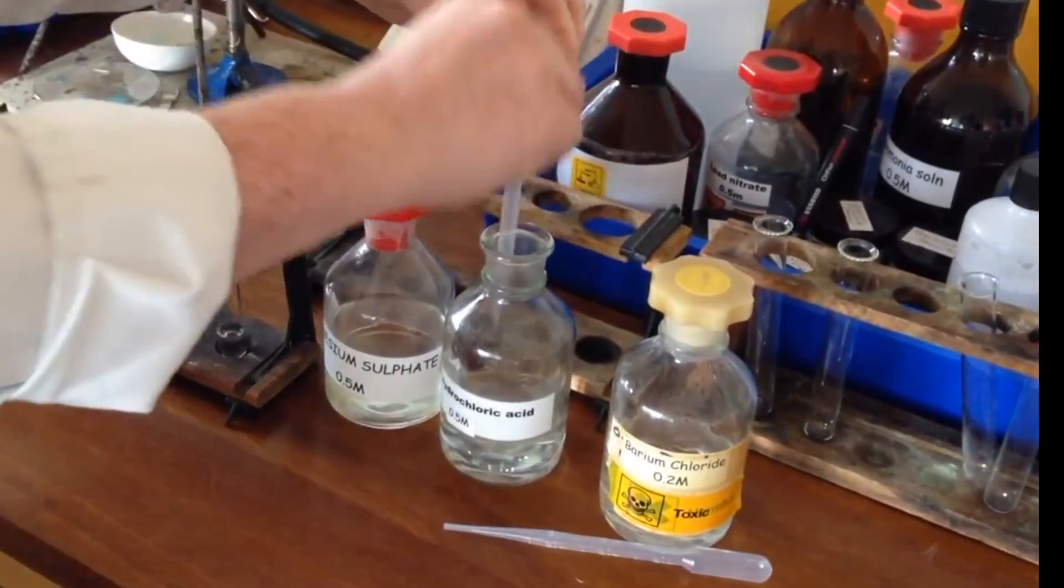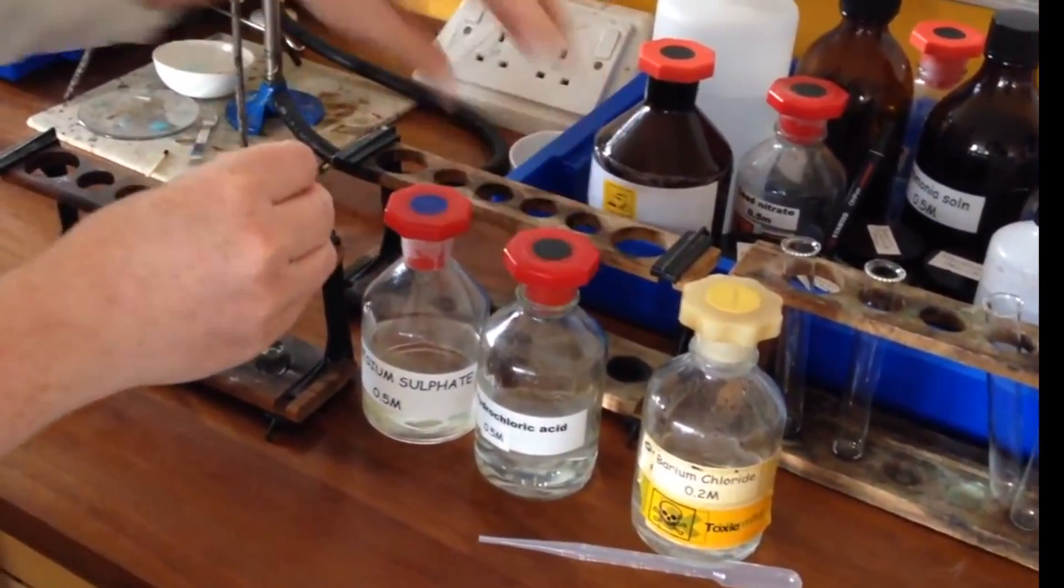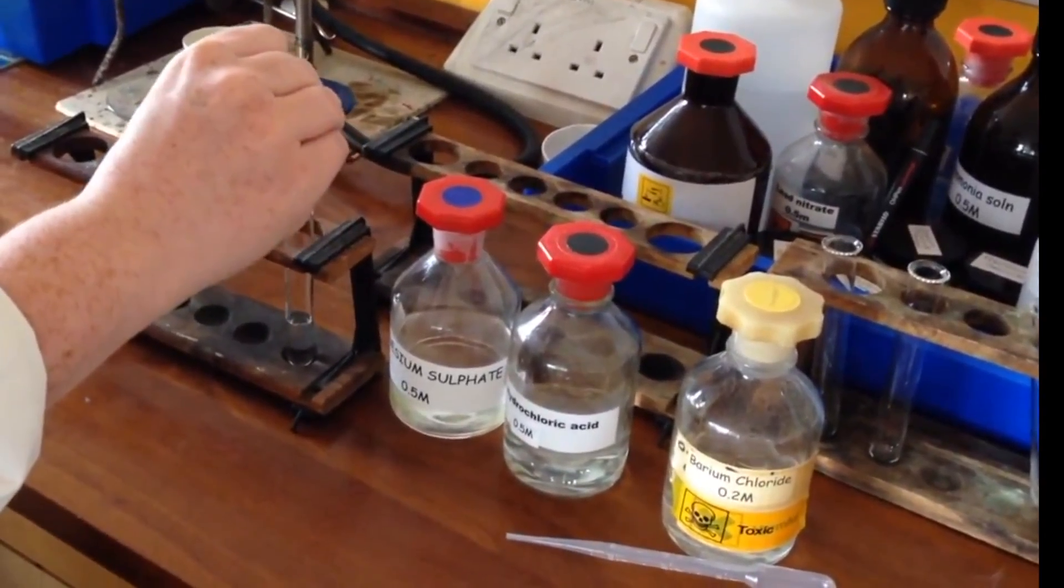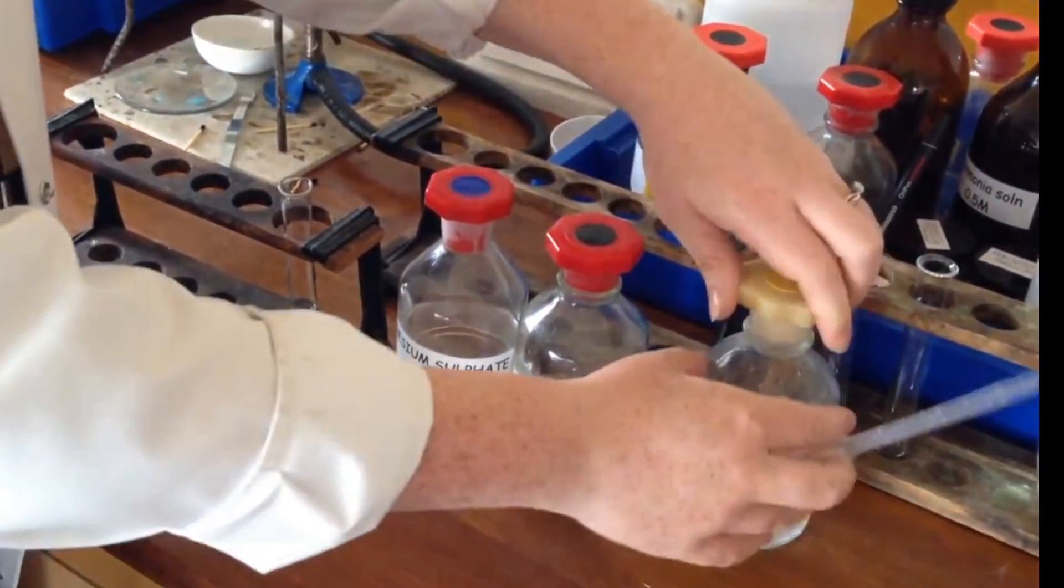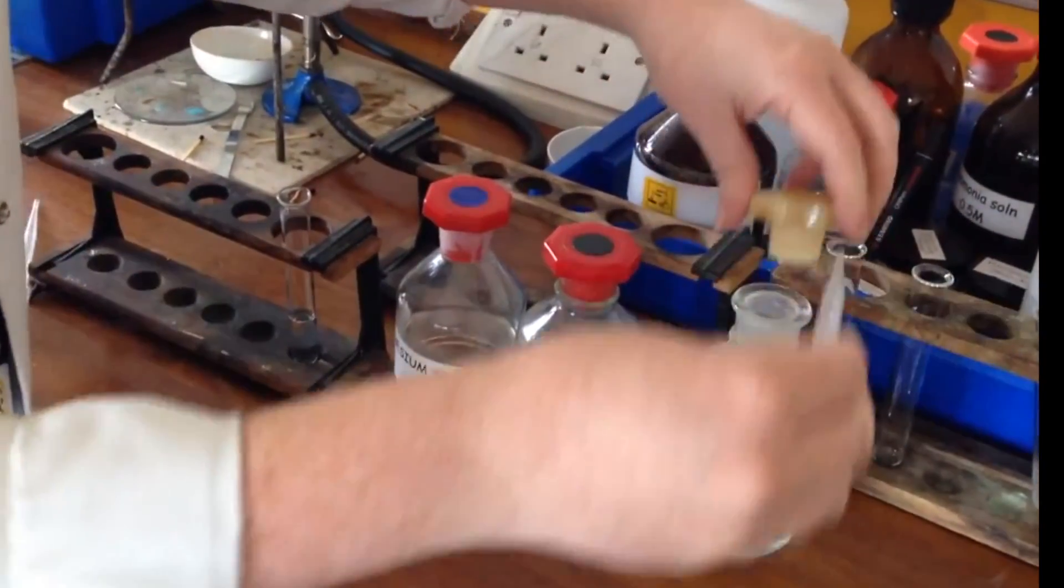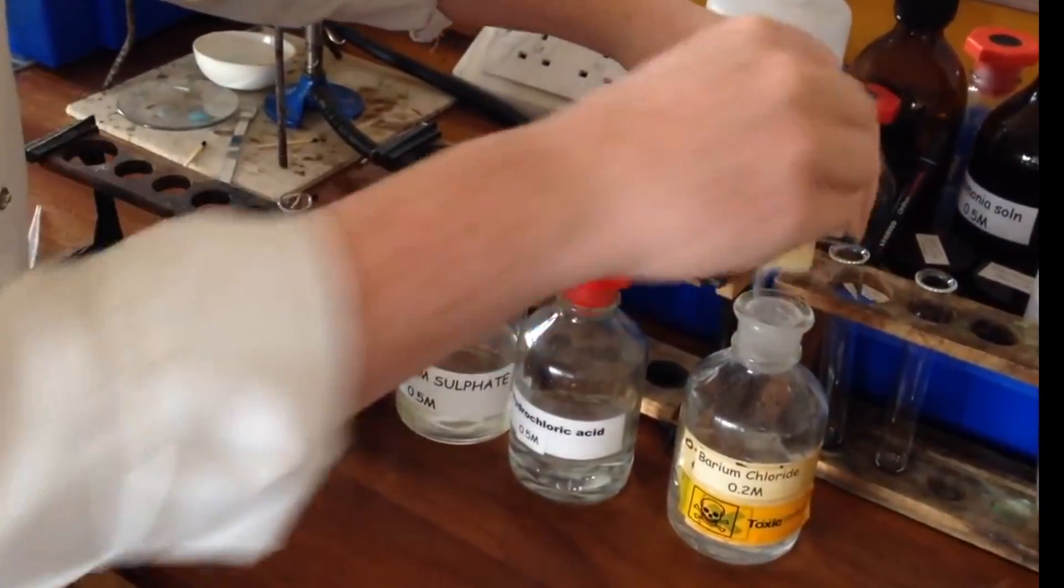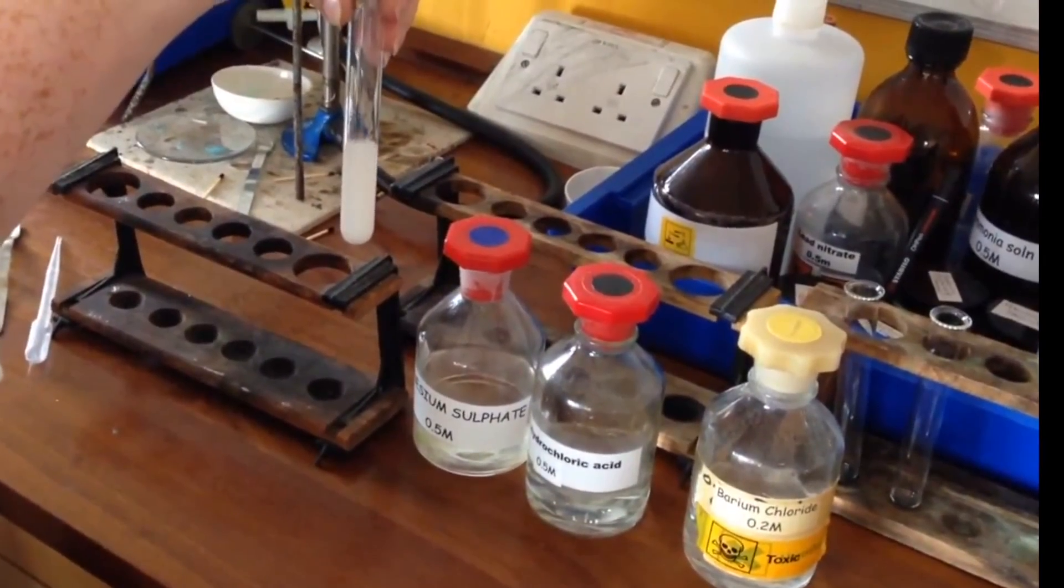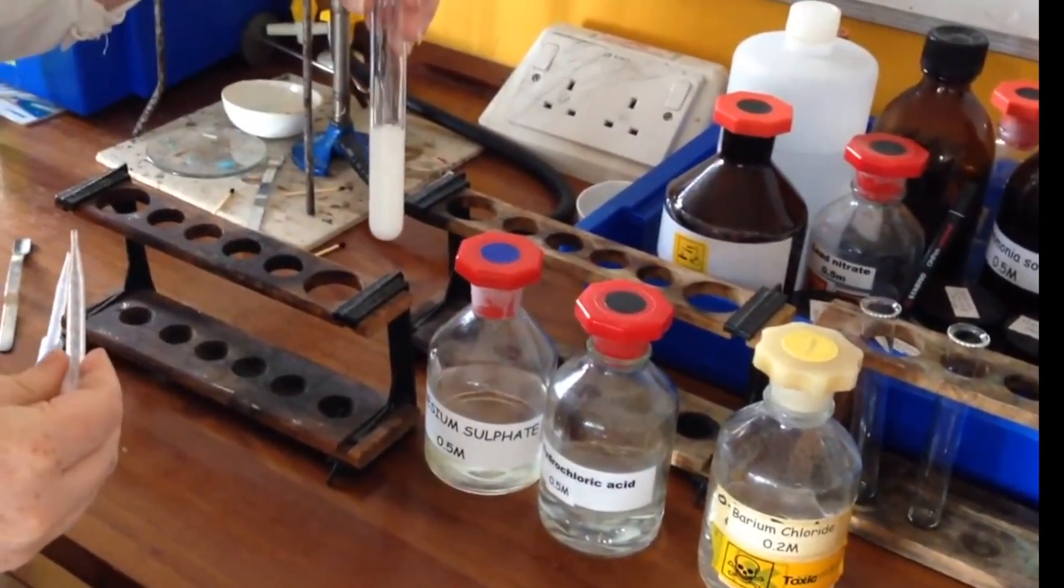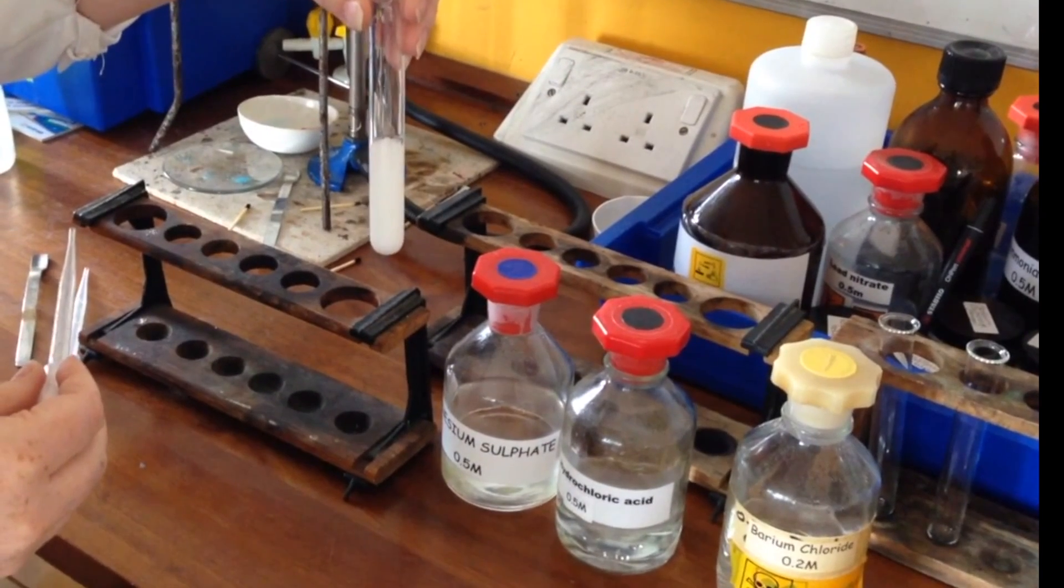I'm trying to get the amount equal. So there's the hydrochloric acid, nothing has happened. We should see something happen when you add in the barium chloride. And now we can see our white precipitate which indicates the presence of sulfate ions.